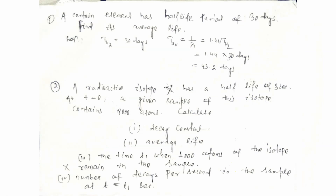Now some problems for you to solve. A certain element has a half-life period of 30 days. Find its average life.